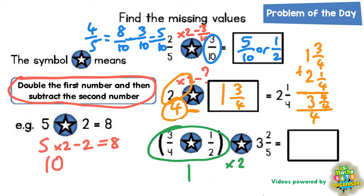So we need to subtract 3 and 2 fifths. Let's see what we get.